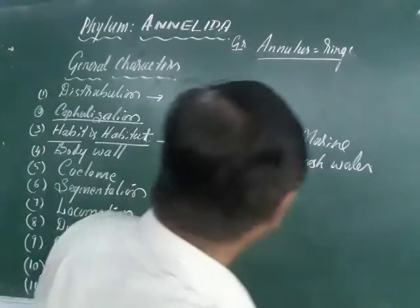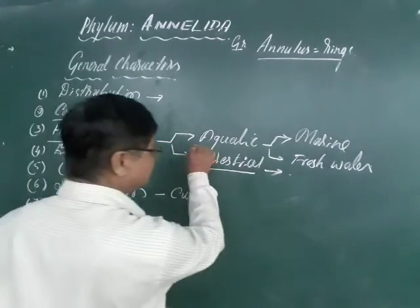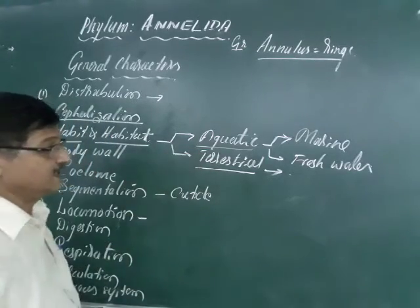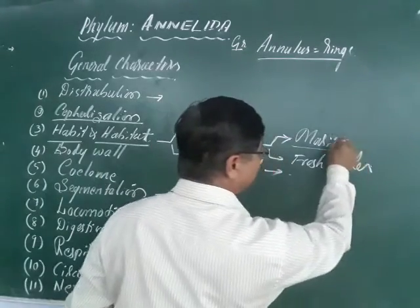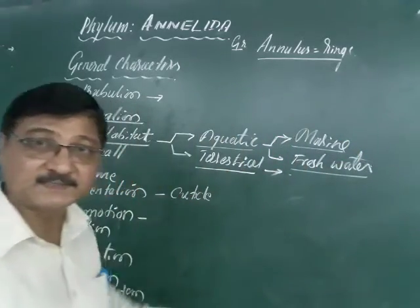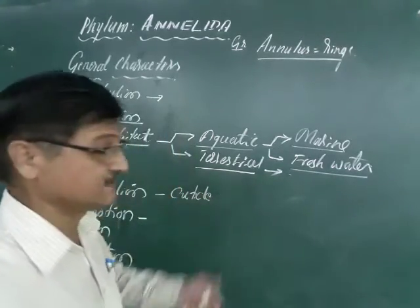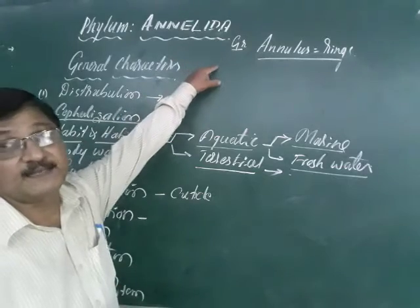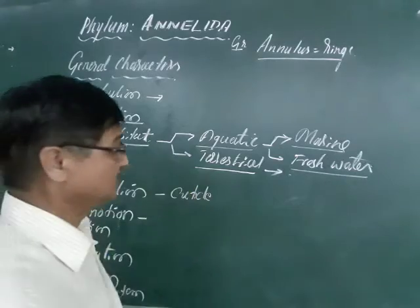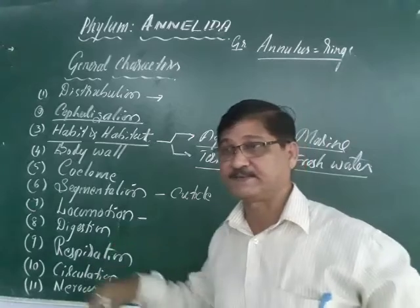As studied in the previous class, a typical example from Annelida is the earthworm. The earthworm is subterrestrial, making burrows. You can make out their presence by the castings visible on the surface of the ground.